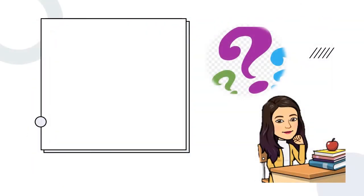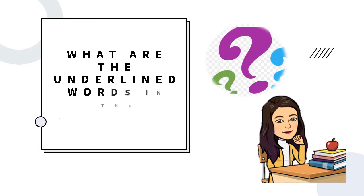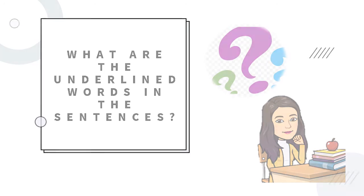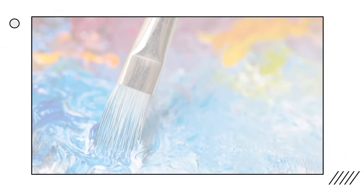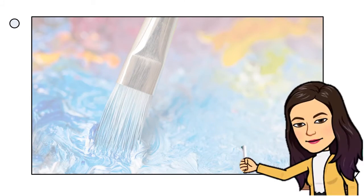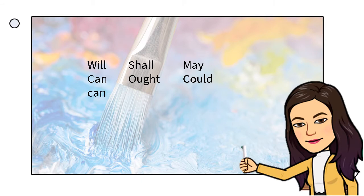What are the underlined words in the sentences? The underlined words are will, shall, may, can, ought, could, and can.